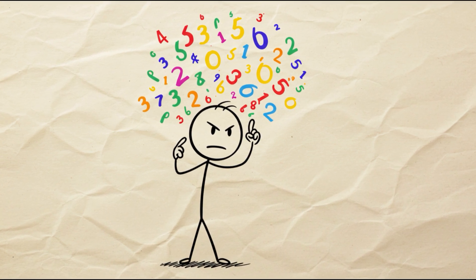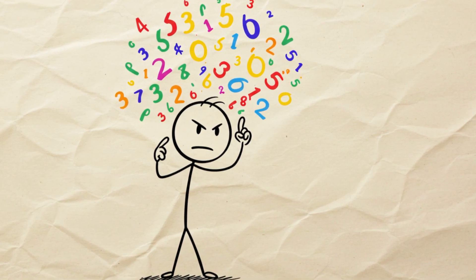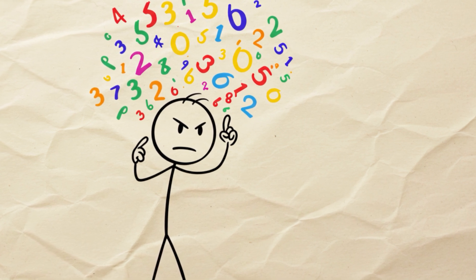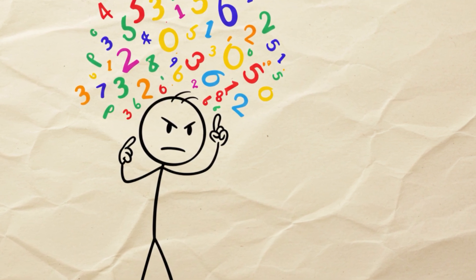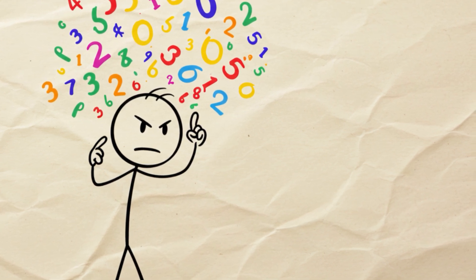But what if you trained your brain to see numbers in simple chunks? For example, 87 is almost 90, and 96 is almost 100. Replace them, and now you have 90 times 100, which gives you 9,000.